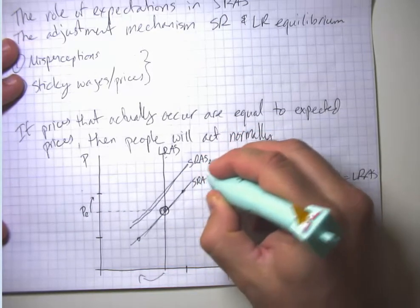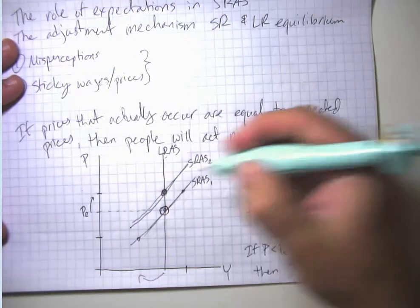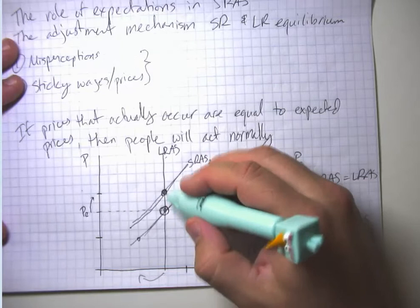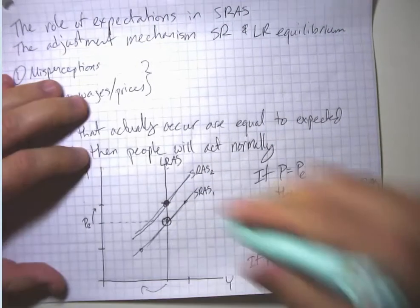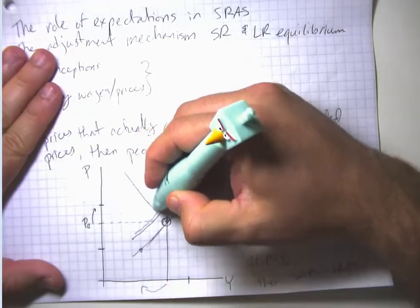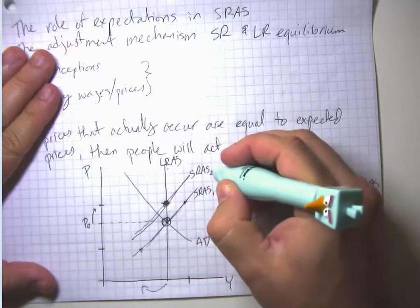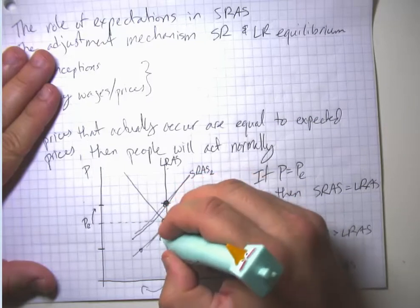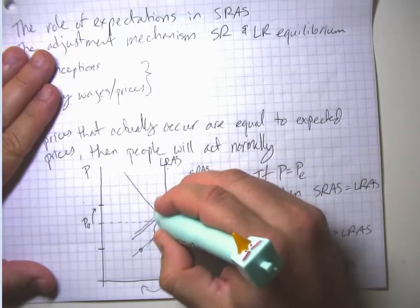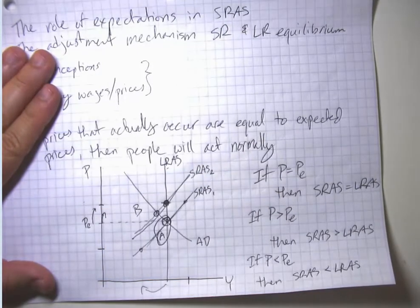Because if people come to expect something different, then just to get them to produce the normal level of output, we're going to have to hit that higher price level. So we can potentially end up with a self-fulfilling prophecy: if people come to expect a higher price level, the short-run aggregate supply curve will shift left, going from a point like A to a point like B, and we will get some of the inflation that people were expecting, though not as much as they were expecting.